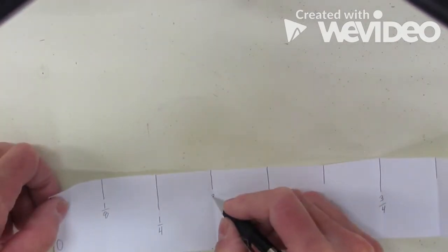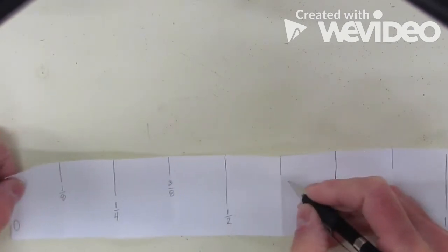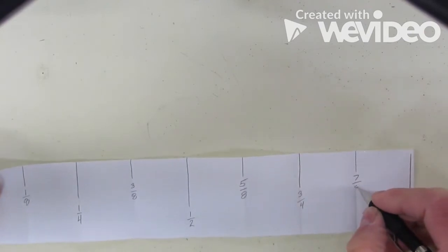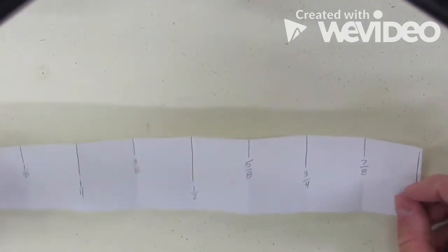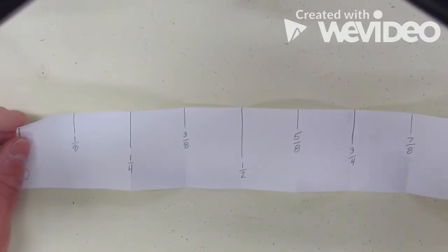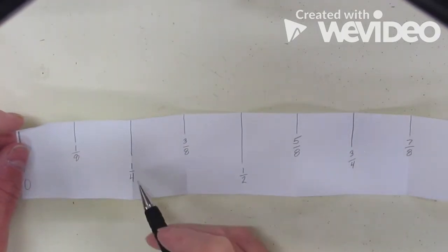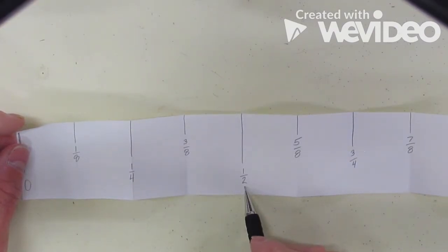So this is 3 eighths. This is 5 eighths. Notice that our numerator or the number on top is always odd because if it becomes an even number, it would be one of these other fractional parts of an inch. For example, 2 eighths reduces to 1 quarter. 2 quarters reduces to 1 half. So it goes that way throughout.